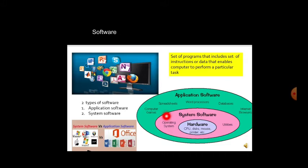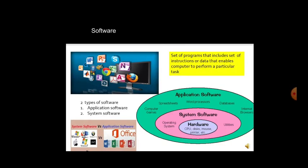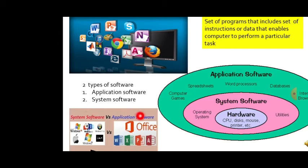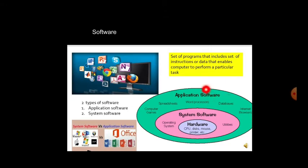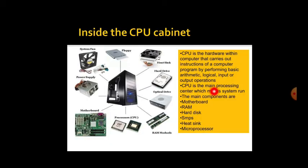System software includes the operating system and utilities, and it connects hardware and application software. Without an operating system, the computer does not work. System software examples are Windows, Linux, and Unix. Application software includes MS Office — Word, Excel, PowerPoint, and Access. Both system software and application software together constitute the software required for the computer to run.